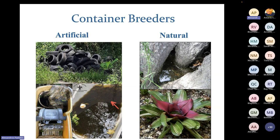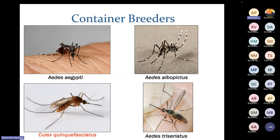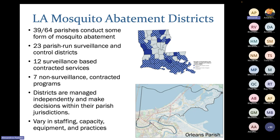Container breeders include both artificial containers — tires, kiddie pools, tubs, buckets — and natural containers like bromeliads and tree holes. Well-known container breeders include Aedes aegypti (the yellow fever mosquito), Aedes albopictus (the Asian tiger mosquito), and Aedes triseriatus, which loves tree holes. Culex quinquefasciatus is an opportunistic breeder — early in the season it breeds in containers, later in the season in more permanent water, wherever organic content is high and surface area is available.